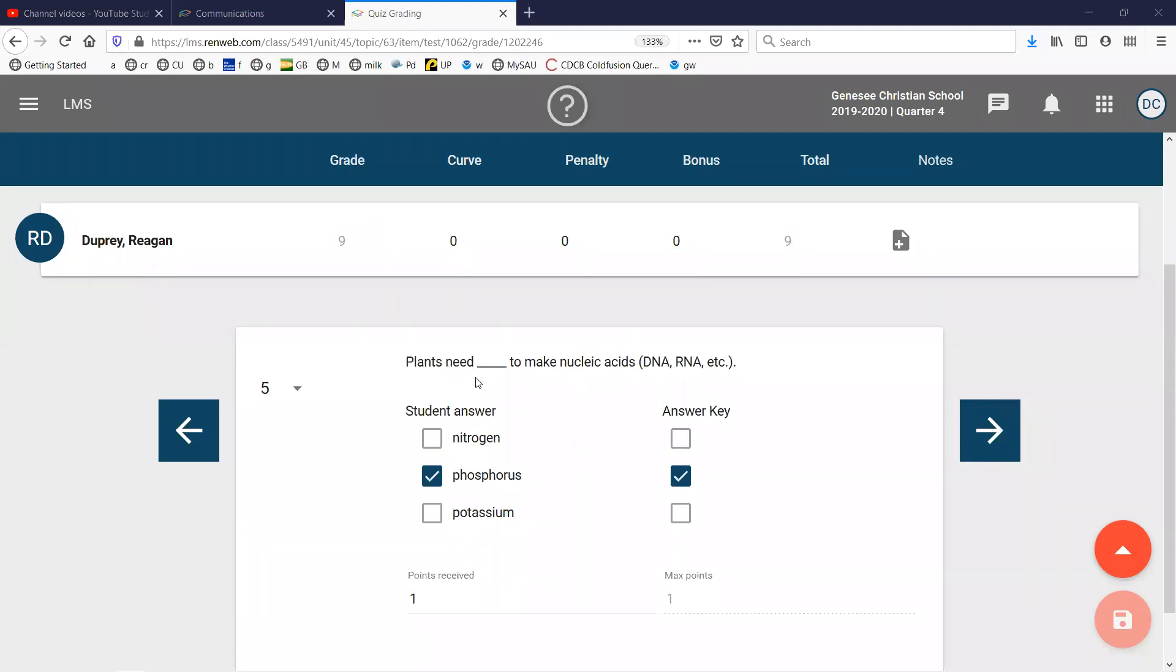Plants need phosphorus to make nucleic acids. I think I may recognize that question. Let's see here. Just a second. Checking out attendance. Alright. Everything looks good.